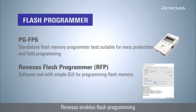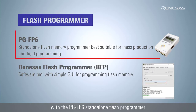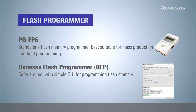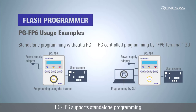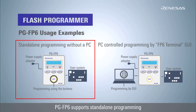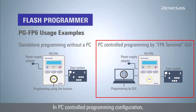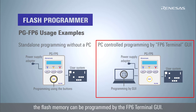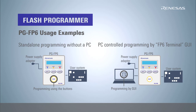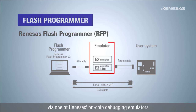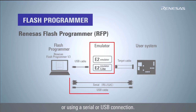Renesas enables flash programming with both the PGFP6 Standalone Flash Programmer and the Renesas Flash Programmer GUI. The PGFP6 supports stand-alone programming which can be operated without a PC, allowing high-speed programming. Programming is done by pressing the button on the control panel. In a PC-controlled configuration, flash memory can be programmed via the FP6 Terminal GUI. The Renesas Flash Programmer also enables programming via e2 emulator, e2 emulator Lite, or a serial or USB connection.